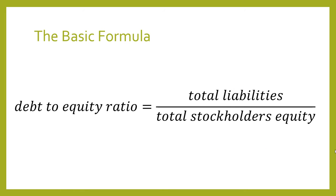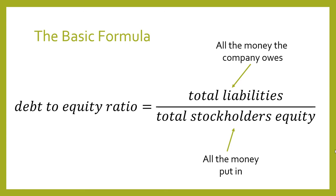The debt to equity ratio is simply the ratio of total liabilities divided by total stockholder's equity. In other words, we're basically doing all of the money the company owes divided by all of the money that's been put in by the owners of the company.